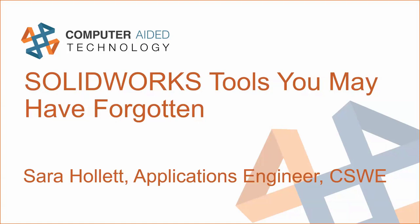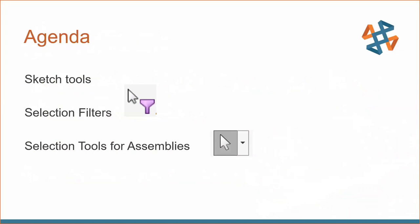Let's take a look at the agenda for today. We've got a few things: first, sketch tools — two sketch tools that will drastically decrease the amount of time you spend sketching. Next, selection filters — that little purple funnel that comes up next to your mouse. We're going to turn that on intentionally, go over the hotkeys that usually get pressed to accidentally turn it on, and how you can make it work for you. Lastly, selection tools for assemblies — that dropdown carrot next to the select button introduces a whole new world of tools that will save you time when modeling or going through assemblies.